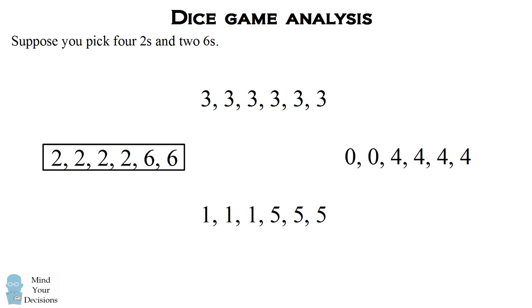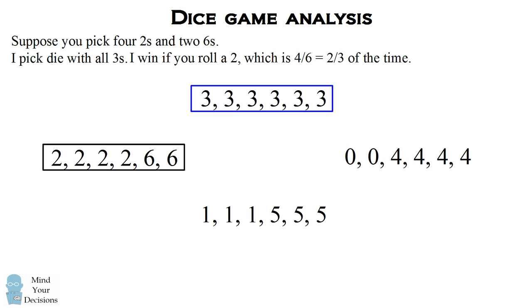Finally, you say, alright, I'll pick the die you just had. And then I'm just going to go ahead and say, well, I'm going to pick the die that has all threes. Now, I'm going to win whenever you roll a two, which happens four six of the time. So once again, your die is losing to my die two-thirds of the time.